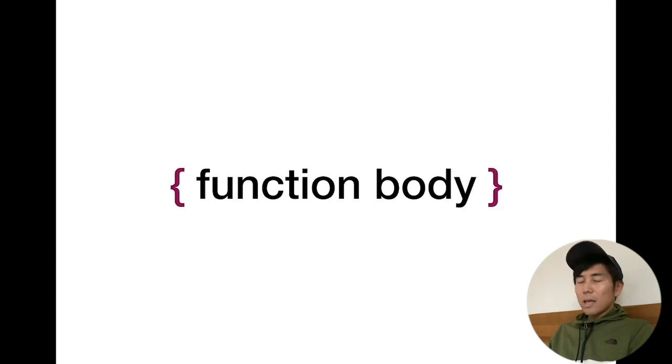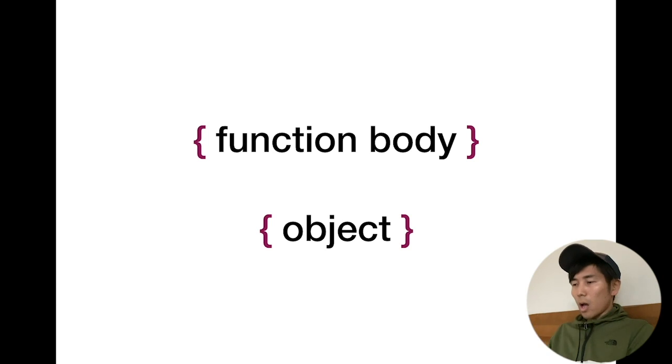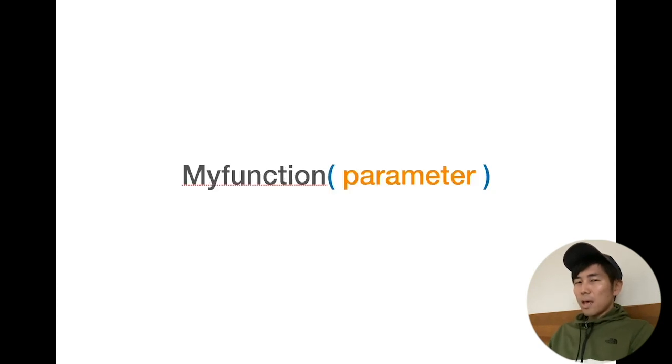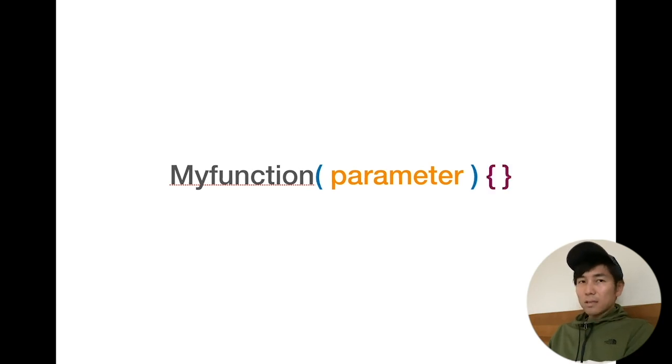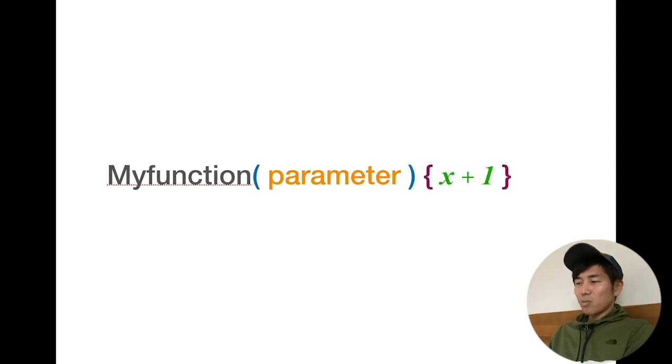Let's talk about curly brackets. Curly brackets are usually used to enclose a function body or an object. Let's go one by one. Function body: generally if you define a function, let's call it my function, then the parameter goes inside the parenthesis and right after that we have the curly brackets. Inside here you talk about what the function does. If we take the earlier case, it will be x plus 1. That's the function body.